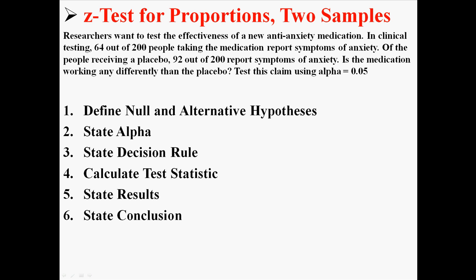Of the people receiving just a placebo, 92 out of 200 reported symptoms of anxiety. Is the medication working any differently than the placebo? The test is conducted using alpha .05. Notice that these are proportions — 64 out of 200 and 92 out of 200 — and we're going to compare these two proportions using a Z-test. This Z-test is going to have six steps.